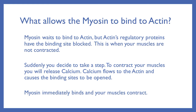Suddenly you decide that you want to take a step or blink your eyes. To contract your muscles, you are going to release calcium. Calcium flows to the actin and causes the binding sites to open. Myosin will immediately bind and begin to contract those muscles.